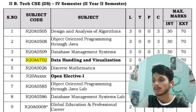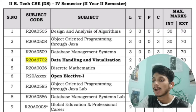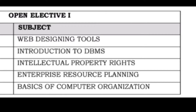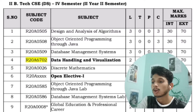In the second semester of second year, you will have Design and Analysis of Algorithms, Object-Oriented Programming through Java, Database Management Systems, Data Handling and Visualization, and Discrete Mathematics. Open Elective 1 options include Web Designing Tools, Introduction to DBMS, Intellectual Property Rights, Enterprise Resource Planning, and Basics of Computer Organization. You will also have Global Education and Professional Career, with labs for OOP through Java and DBMS.